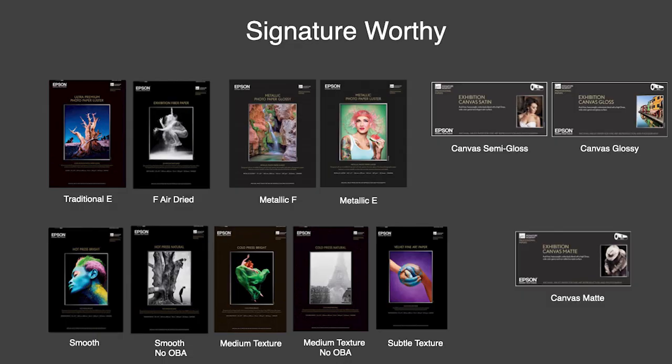Then there are the metallic papers. I enjoy the metallic paper — I've made some nice metallic prints. As they say, there's no accounting for taste. F for glossy, E is the orange peel, and F stood for ferrotype — those are the old surfaces from the darkroom. Those are very high gloss papers. And then canvases, which we talked about earlier.